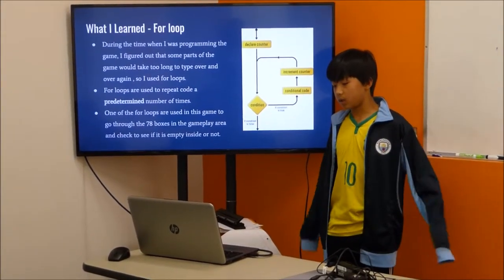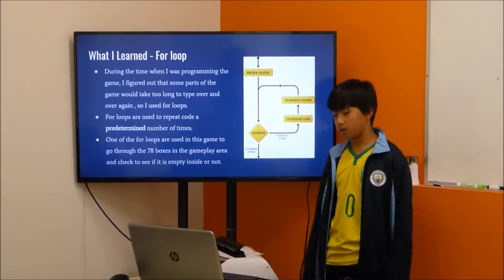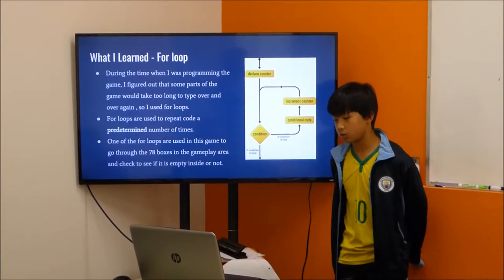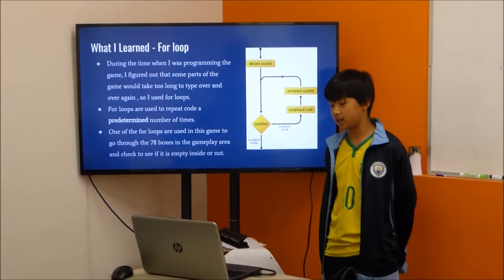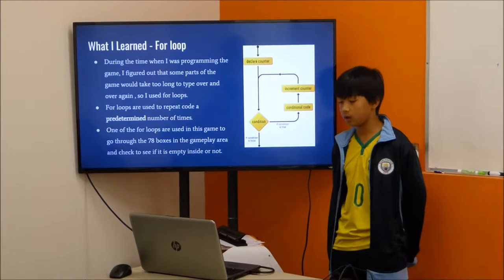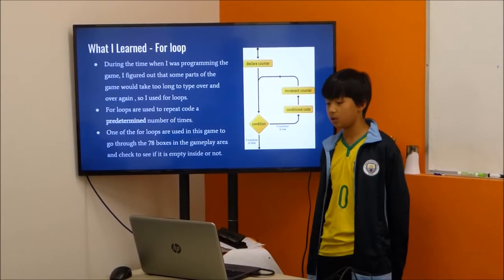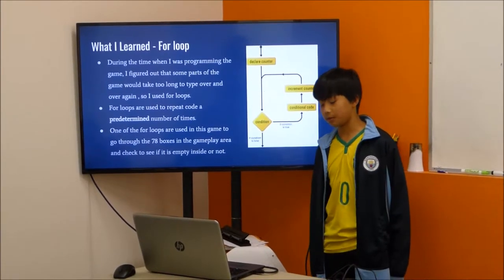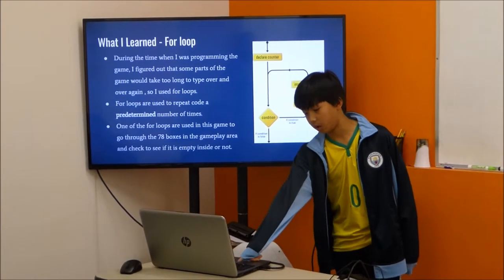One example of a for loop in my game is at the beginning, it goes through all of the 78 boxes in the gameplay area and sees if it's empty or not. If it is empty, then it goes to the next box. If it's not empty, then it clears the box.